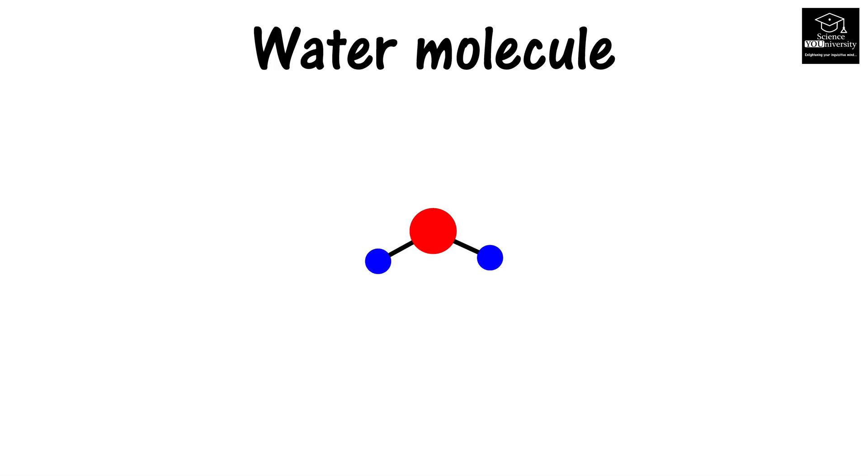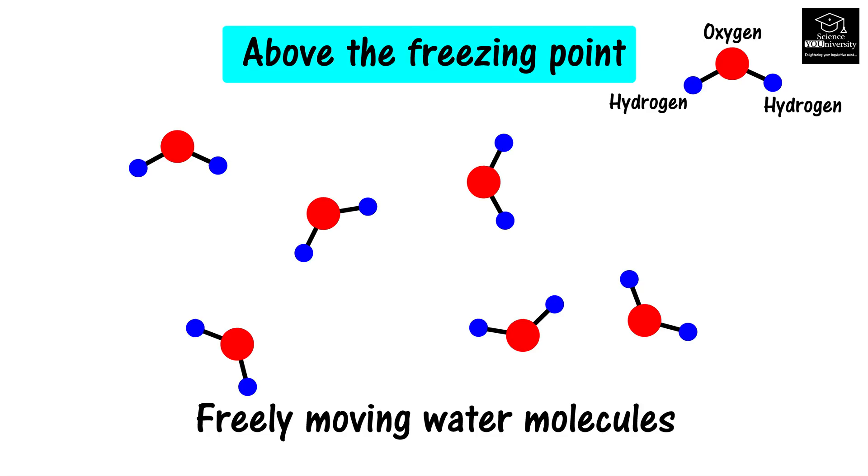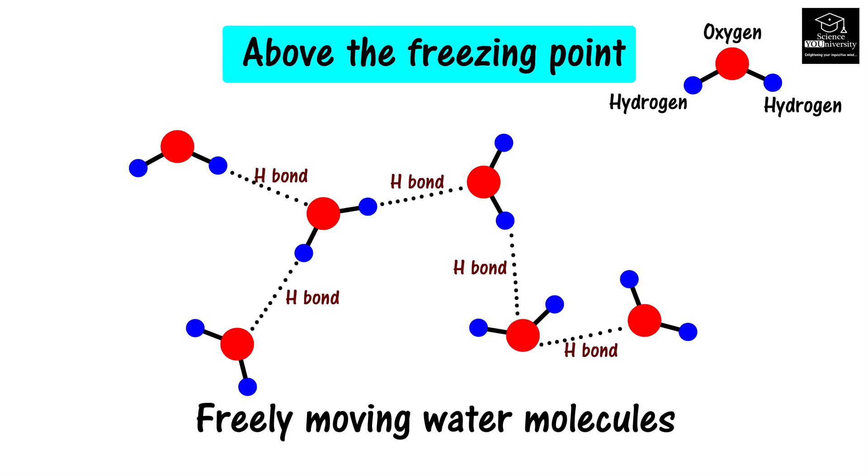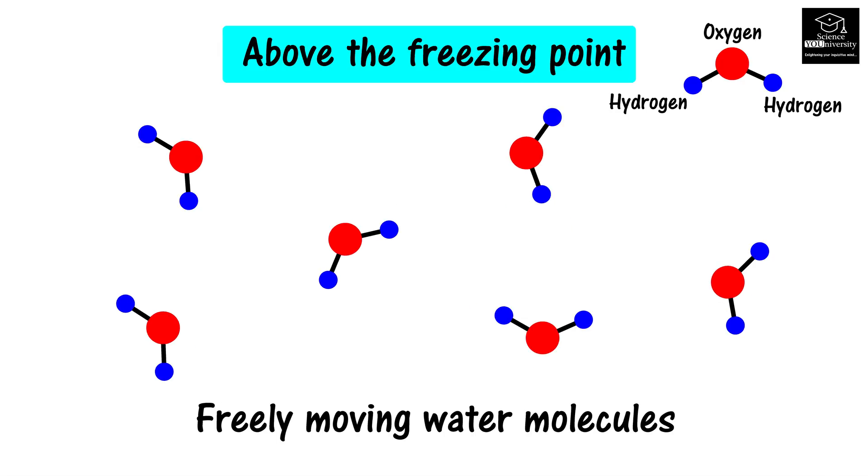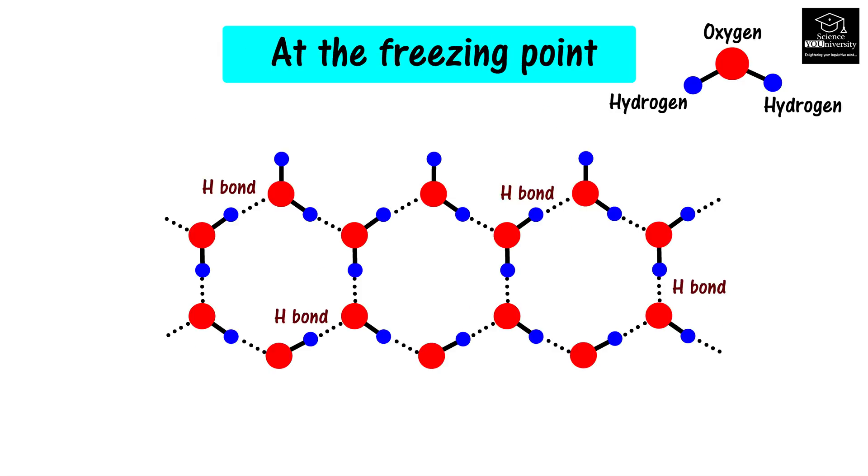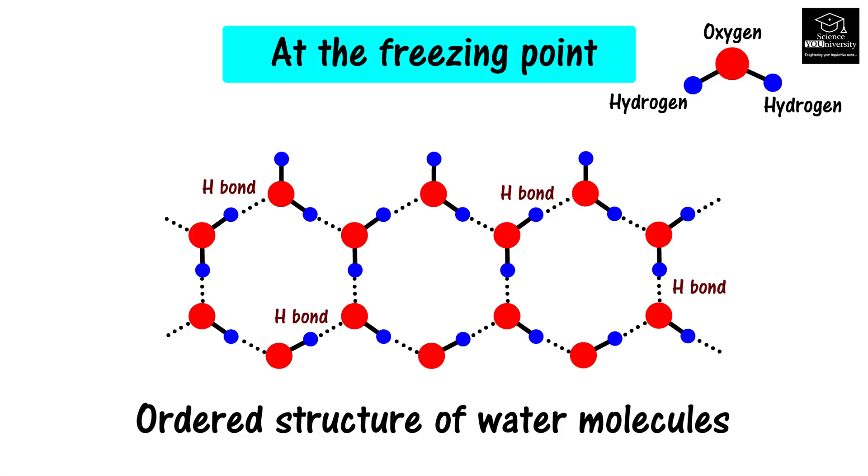A water molecule has two hydrogen atoms and one oxygen atom. Hydrogen bonds can be formed between these water molecules. In the liquid form, water molecules move freely. When water freezes to make ice, these water molecules form an ordered structure.